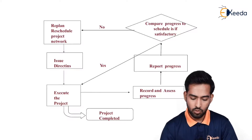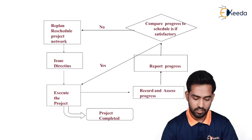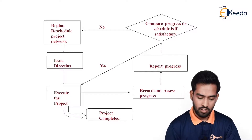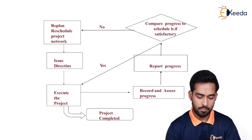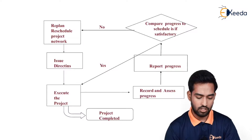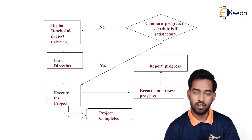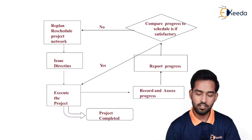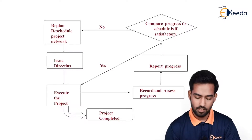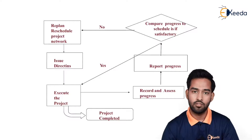In the flowchart, compare the progress to schedule. If satisfactory, continue the flowchart accordingly: replan and schedule the project network, issue direction, execute the project, and reach module completion — that is, we have to reach the project completion phase. If there are some problems, we continue through the flowchart to resolve them.